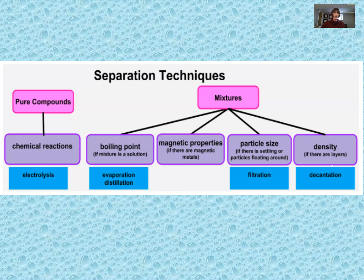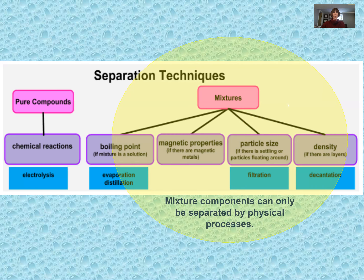Now let's talk about using physical means to separate components of a homogeneous or heterogeneous mixture. Looking at this flow chart, it gives us the separation techniques. A pure compound requires a decomposition reaction or electrolysis to separate its parts. We're focusing on the mixtures side — specifically the physical processes. We'll start with evaporation and distillation for homogeneous mixtures, and move toward the heterogeneous mixture techniques.